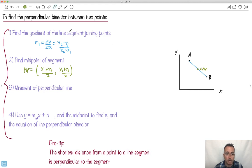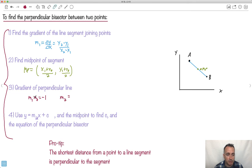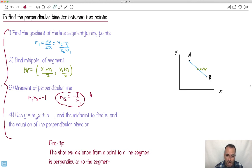Now we need to find the gradient of the perpendicular line. To do that, we use M1 times M2 equals negative 1, so M2 equals negative 1 over M1. This tells me the gradient of the line I'm going to draw. Then finally, we use Y equals M2·X plus C, using M2 and the midpoint coordinates to find the full equation.